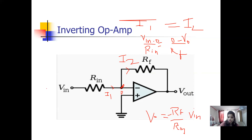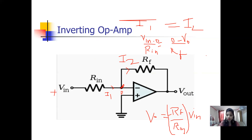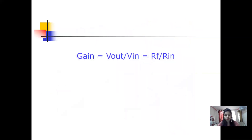So the output equals the input multiplied by the gain term, which is R_f over R_in. This term is called the gain. This is why it's called inverting — if you apply a positive input you get a negative output, or in terms of waveform, if you give a sine wave the output is 180 degrees out of phase with the input.